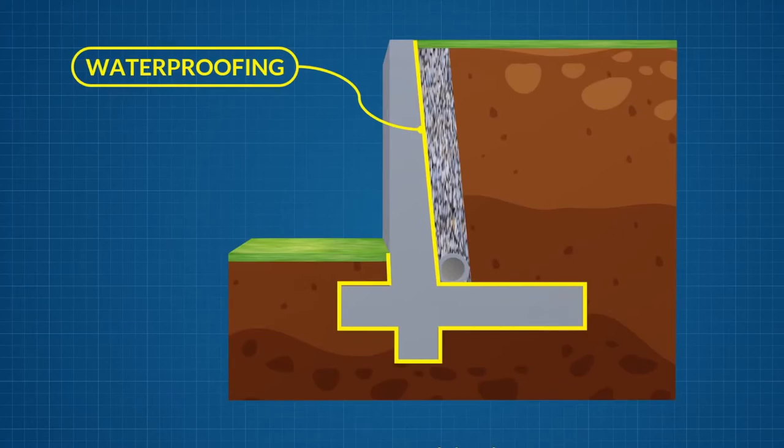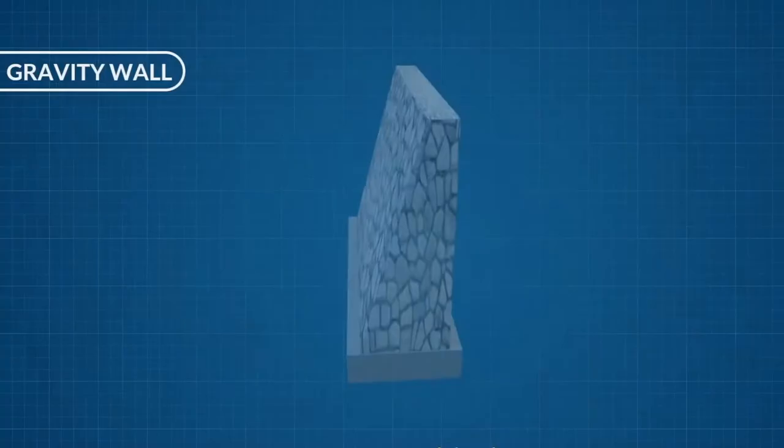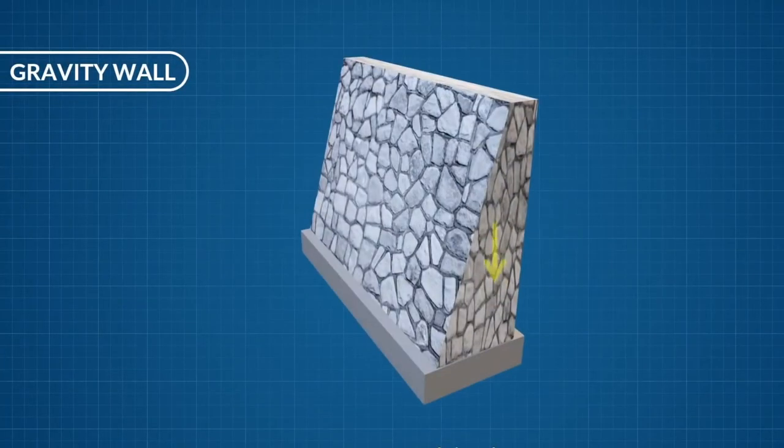Let's consider two of the most common types of retaining wall. Gravity walls resist earth pressure via the self-weight of the wall alone. Typically these walls are constructed from stone masonry.